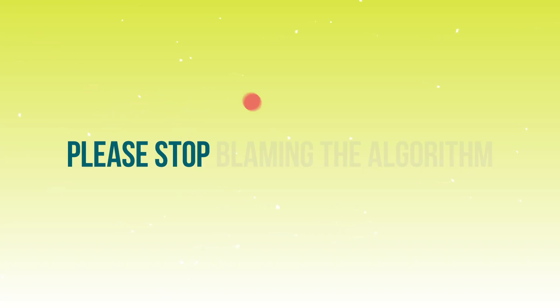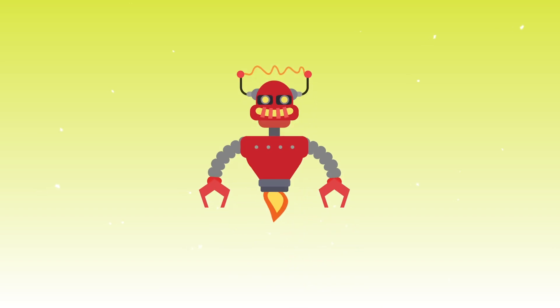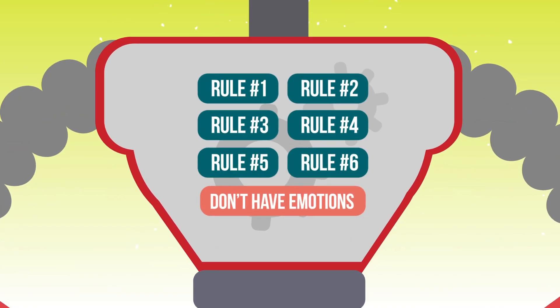But first, an important public service announcement: please stop blaming the algorithm. And while we're talking about blame, stop blaming your tools — they only do what you say. When we blame the algorithm we abdicate responsibility, and this does not solve the problem. Algorithms are just sets of rules. They don't have emotions, they don't do anything special, they don't hate us.